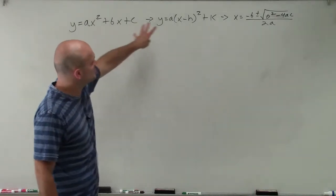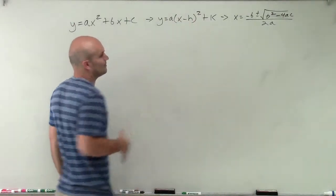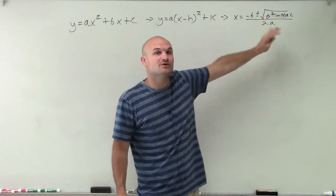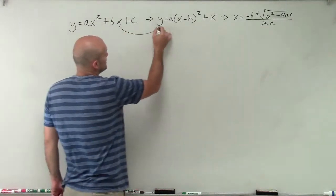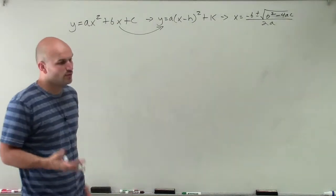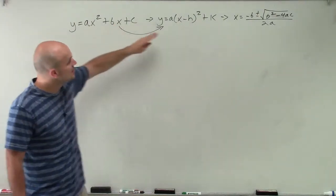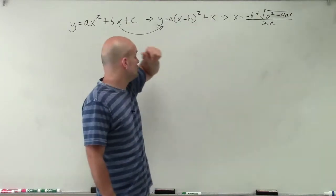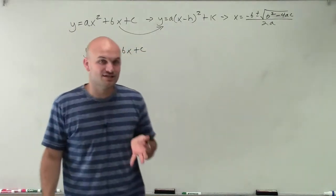So how do we go from this to this to this? Remember, h and k just represent different parts of our equation. These all still represent quadratic equations, and the quadratic formula is a format for us to find our x-intercepts, zeros, or roots. To go from the standard form to the quadratic formula, we use completing the square.